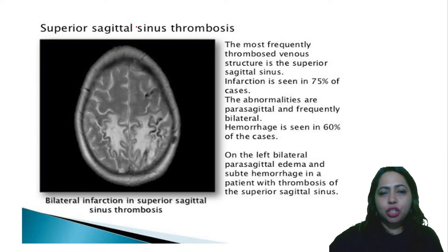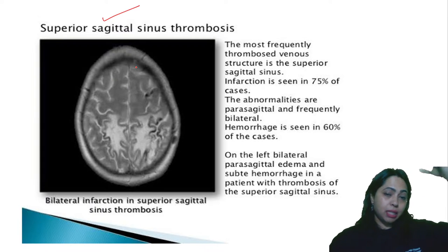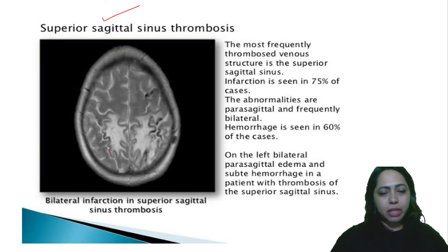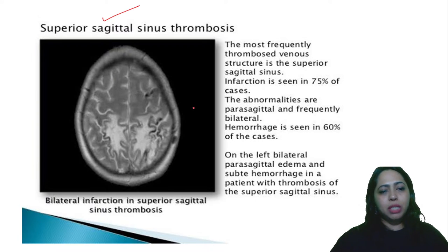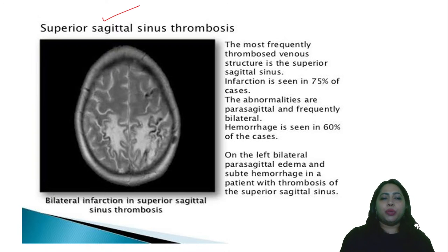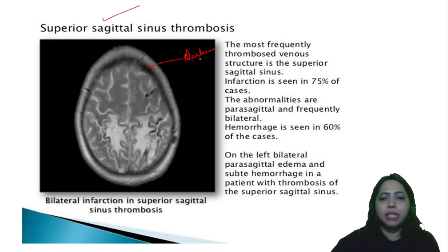Superior sagittal sinus thrombosis: the superior sagittal sinus is present within its sulcus. It is the most frequently thrombosed venous sinus, occurring in 75% of cases. Abnormalities are parasagittal and frequently bilateral. Hemorrhage is seen in 60% of cases. You can see bilateral parasagittal edema and hemorrhage associated with thrombosis of the superior sagittal sinus.